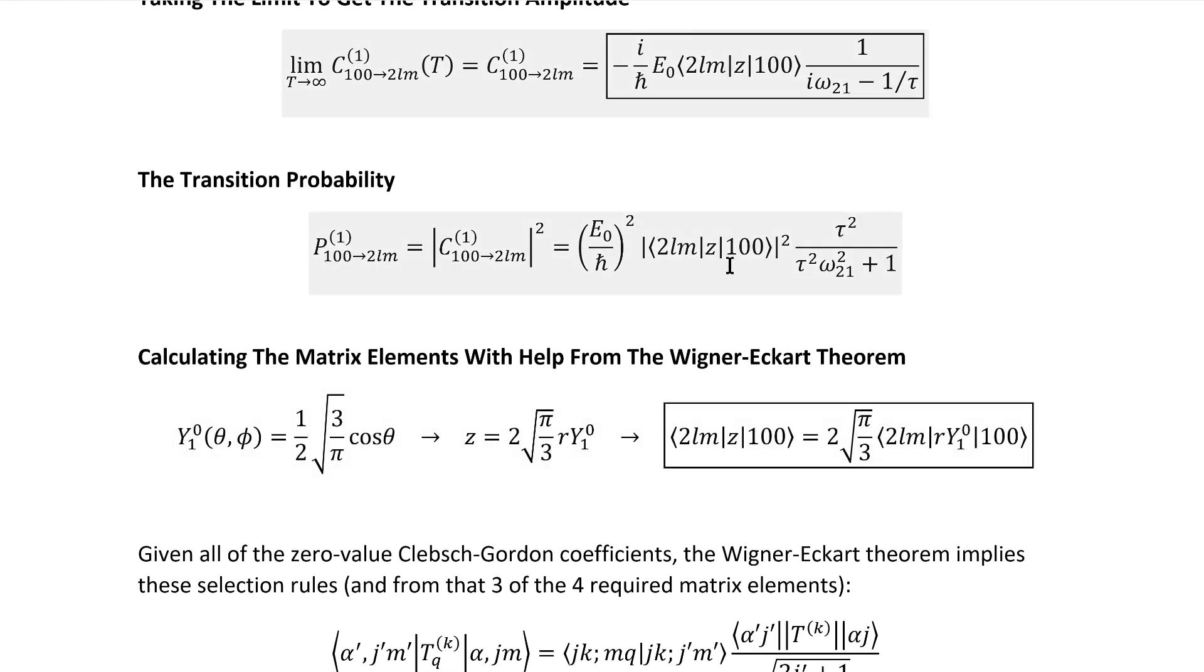Fortunately, we can get through that surprisingly quickly by applying the Wigner-Eckart theorem. As you'll see, that'll reduce the problem from four integrals to just one. Applying the Wigner-Eckart theorem, though, requires us to rewrite the operator in this matrix element in terms of spherical tensors.